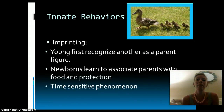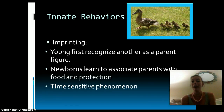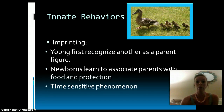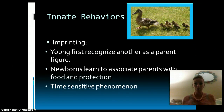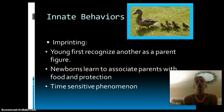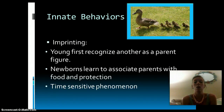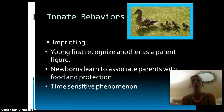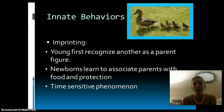Another innate behavior is imprinting, which has to do with recognizing another organism as a parent figure. Our example is with ducks. If you have a clutch of ducklings — a clutch being the eggs — and they hatch, the babies are going to think of whatever organism they see first as their parent. They imprint on that organism. Most likely it's going to be their mother duck, and they'll follow that duck around, associating that parent with protection and food. This is a time-sensitive phenomenon.